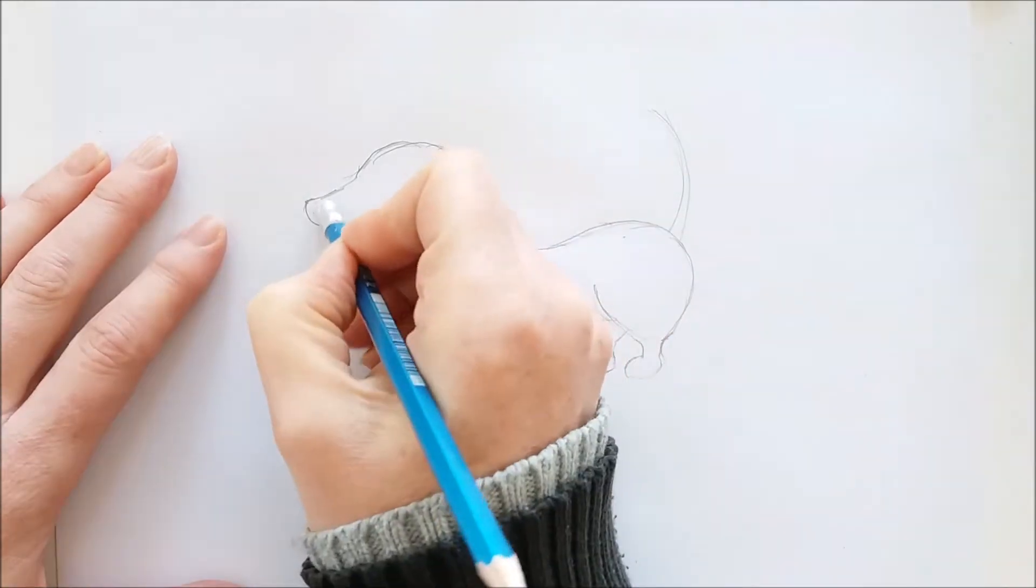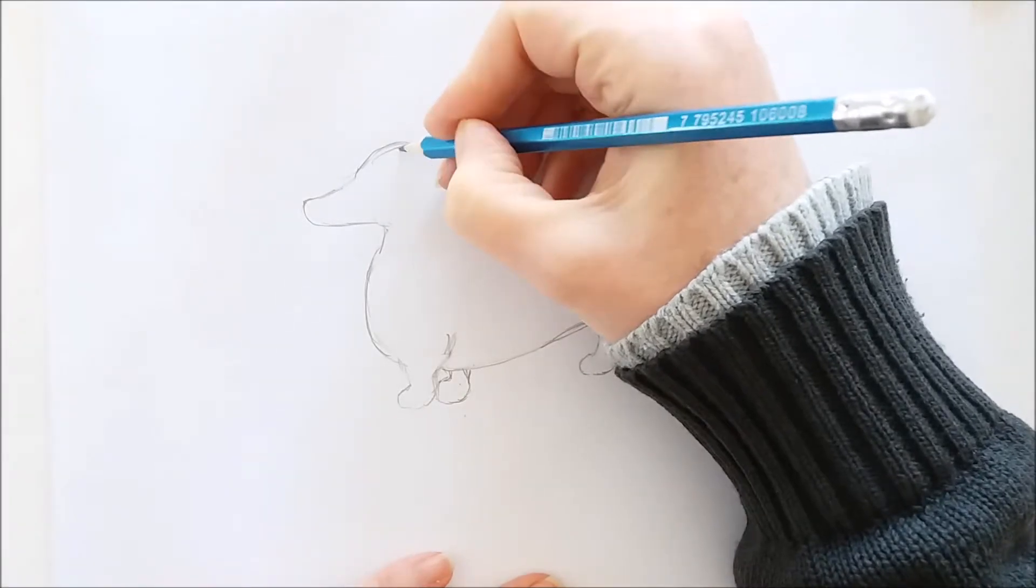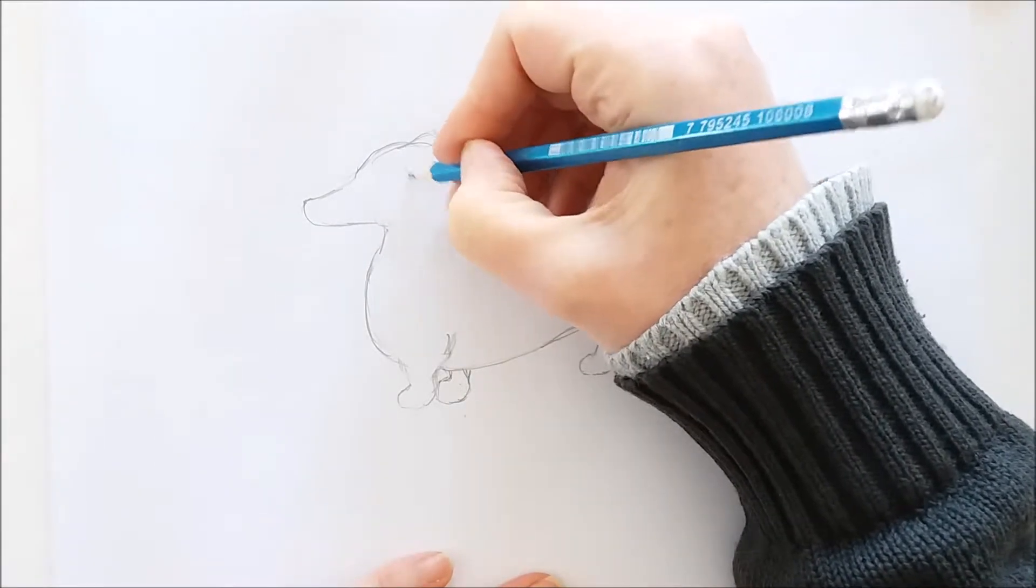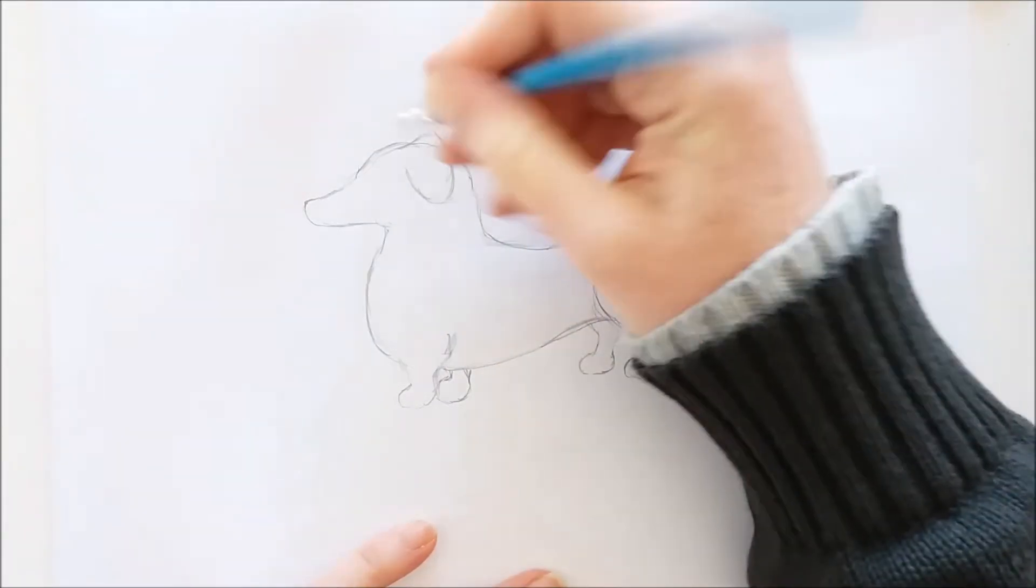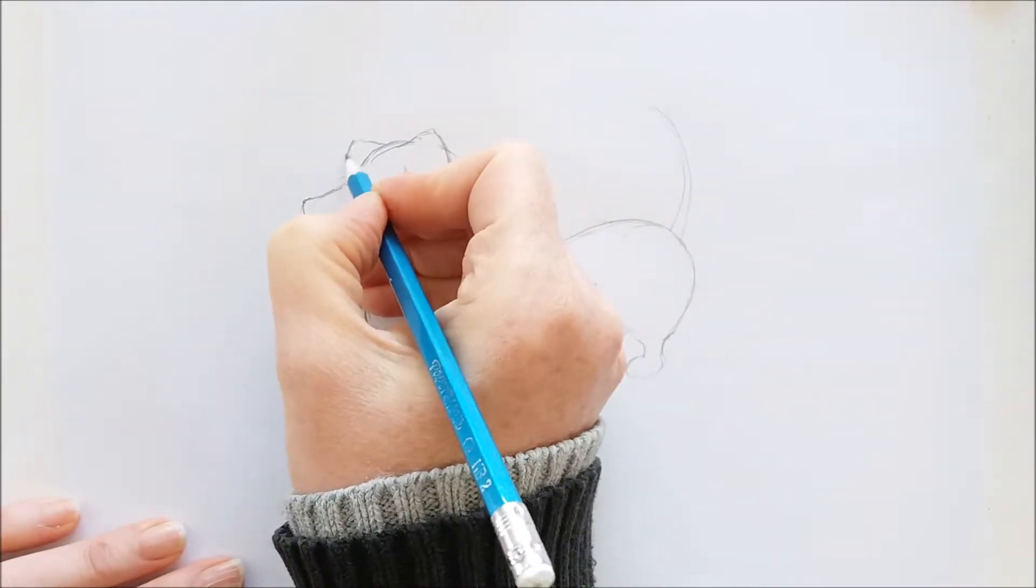Then I'm going to draw in the ears. And the ears are nice and big and floppy. So you can just draw an angled line up and then a U shape for this ear. And we'll do just a little tiny kind of V shape over here for the other ear.